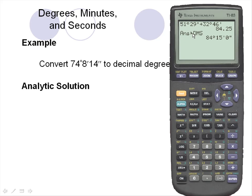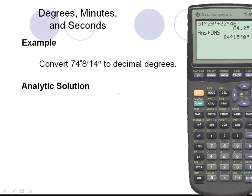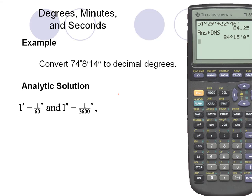Next, let's convert 74 degrees, 8 minutes, and 14 seconds to a decimal degree. Here's the analytic solution.